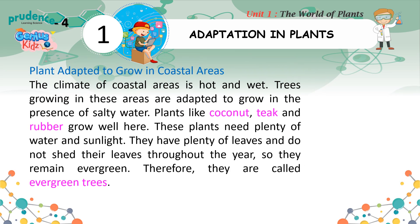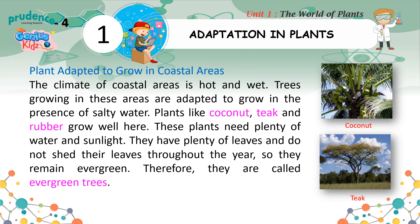Plants adapted to grow in coastal areas: The climate of coastal areas is hot and wet. Trees growing in these areas are adapted to grow in the presence of salty water. Plants like coconut, teak, and rubber grow well here. These plants need plenty of water and sunlight. They have plenty of leaves and do not shed their leaves throughout the year, so they remain evergreen and are called evergreen trees.